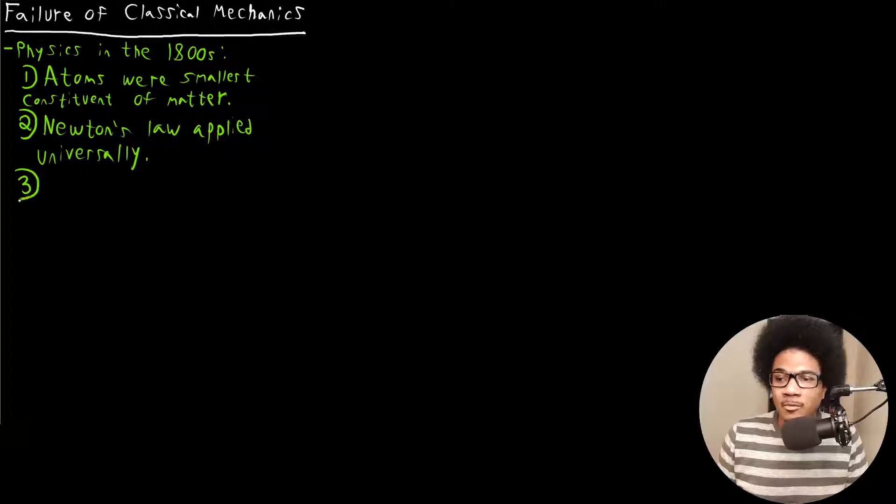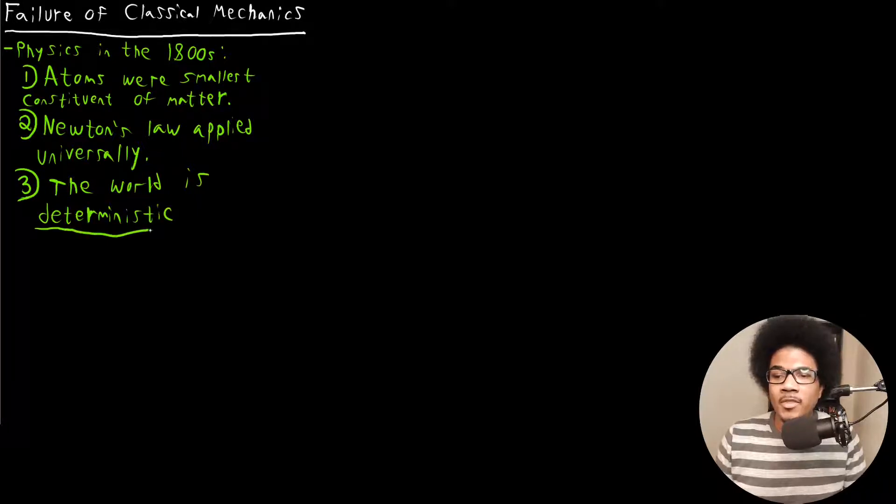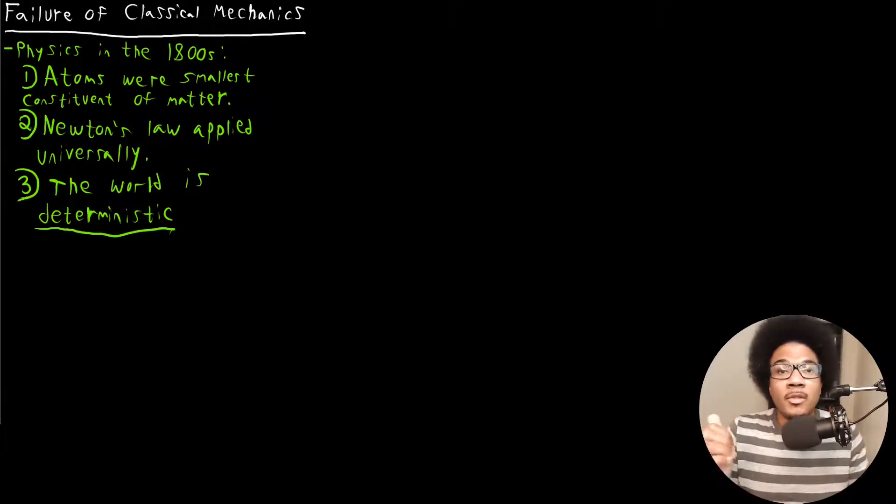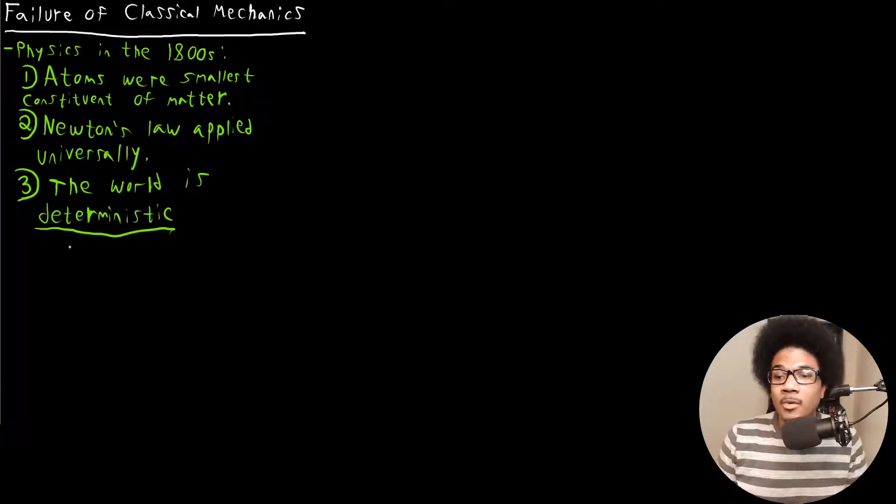So the third one, and this is going to require a lot of exposition, but they believe that the world is deterministic. And I'll talk a little bit more about this term, deterministic. What this means is just a fancy way of saying that every time you get the same output from a given input. There's no randomness, there's no fluctuation. They believe that the world was simply deterministic. If you know the initial state of a system, you can predict its output.